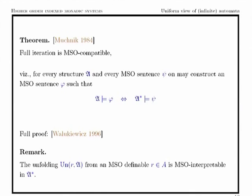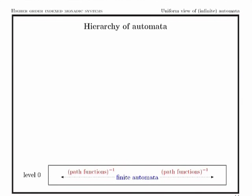Namely, whenever we have a formula on the iterated structure, we may construct an equivalent formula for the original structure such that one holds on one structure if and only if the other holds on the other. The proof of this result was first given in 1984 in a conference paper by Stupp, and the full longer version was given by Walukiewicz in 1996. Another interesting point is that within full iteration you may interpret the unfolding from a given vertex of a structure, which is not possible in basic iteration.